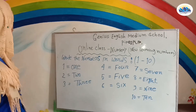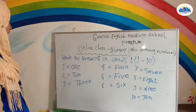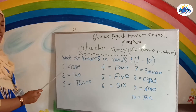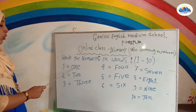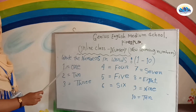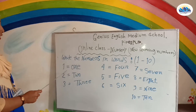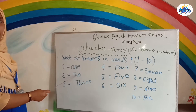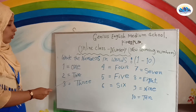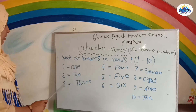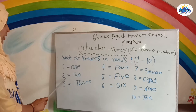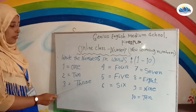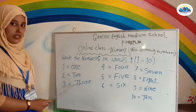Okay, children. Again. Number one: O-F-C. One. Number two: T-W-O. Two. Number three: T-A-S-R-W. Three.